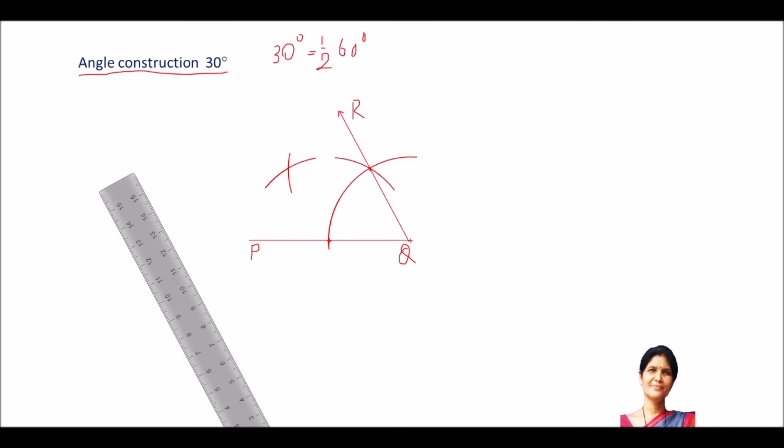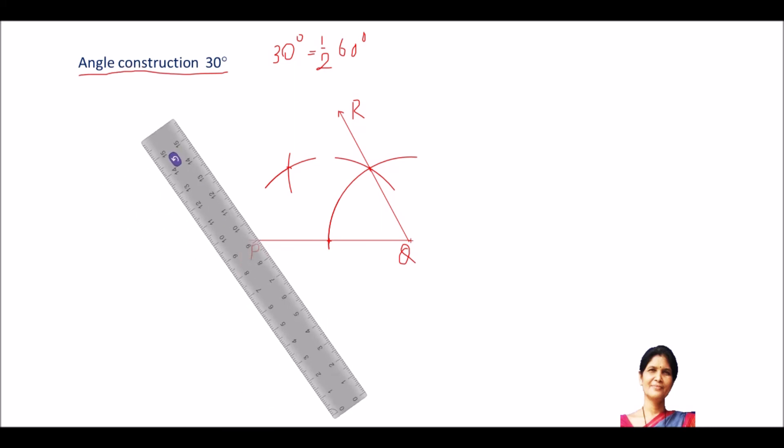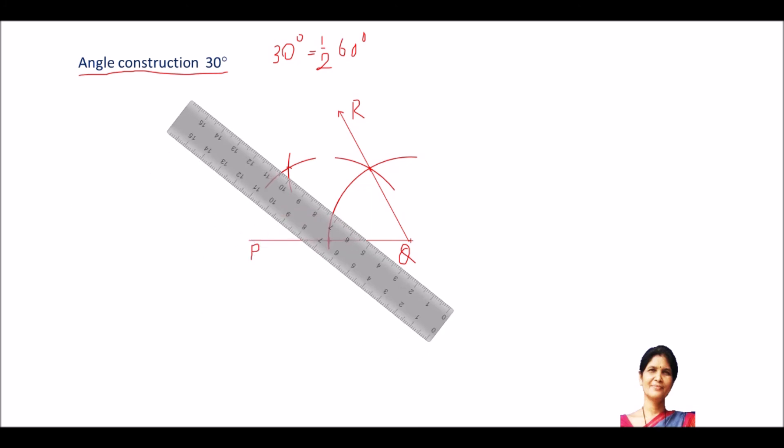I am keeping the compass. Now, when I join this intersection point with Q, I will get this 60 degree is made into equal two parts. So, each will be 30 degree and 30 degree. So, let us draw the line segment joining your Q and the intersection point of the arc. You can pause the video, you can draw yourself, you will be quicker than me. Now, let us join this two.